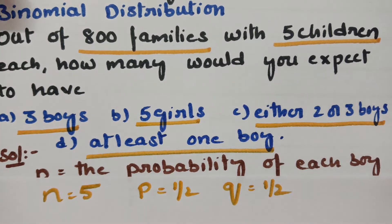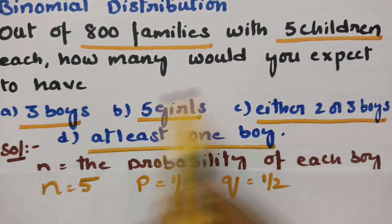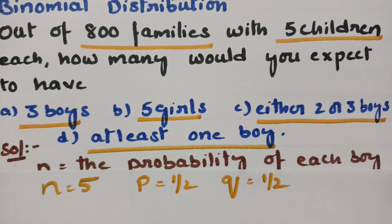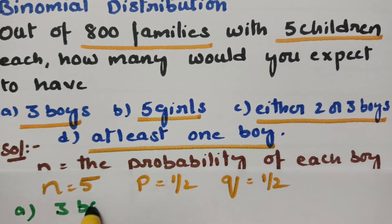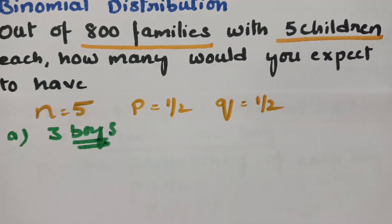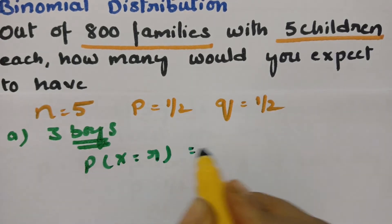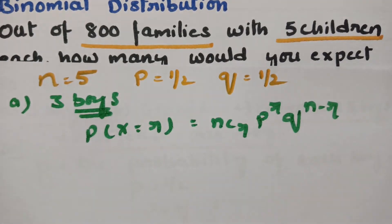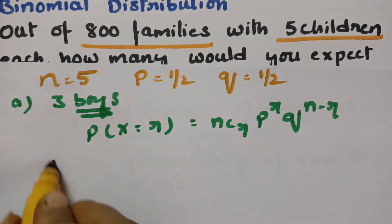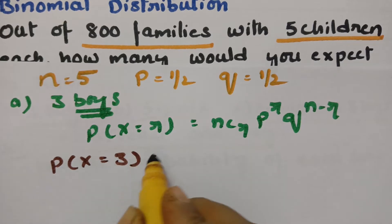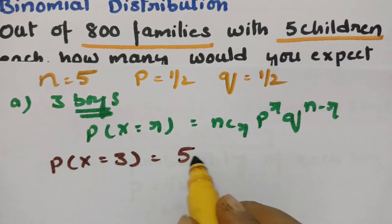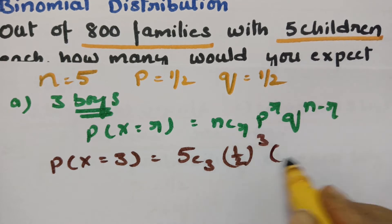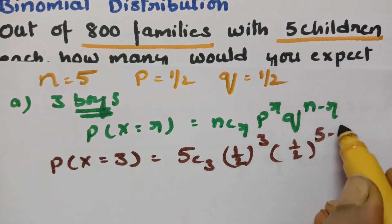We need to find the probability that out of 5 children, exactly 3 are boys. The probability P(X=R) is given by NCR × P^R × Q^(N−R) according to the binomial distribution. Here R=3, so we calculate P(X=3) with N=5, P=1/2, giving 5C3 × (1/2)^3 × (1/2)^(5−3).